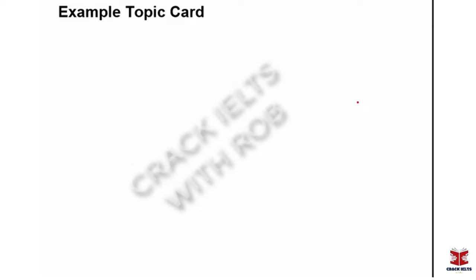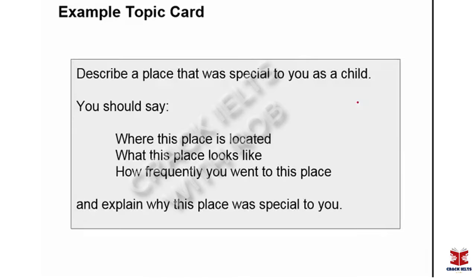Let's look at an example topic card. This would be a typical card for Part Two. At the top we have the main question or topic. It says: 'Describe a place that was special to you as a child.' That's a typical kind of Part Two topic. Then below we see our sub-points.